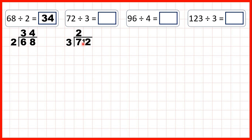So now, because we have a 1 in front of our ones digit, we have 12 divided by 3. That's 4, because 4 times 3 is 12, so our answer is 24.